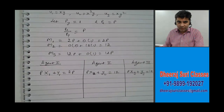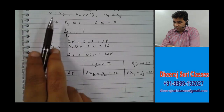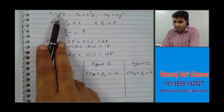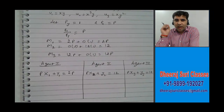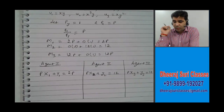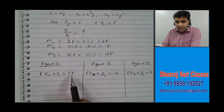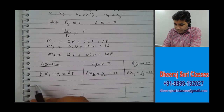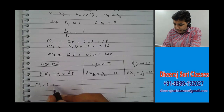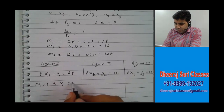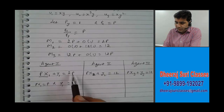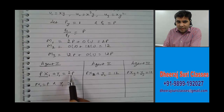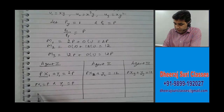Now if you look carefully, the utility functions are Cobb-Douglas functions. For agent 1 it is x times y, so alpha is 1 and beta is 1. He is spending half of his money on good 1 and half on good 2. He has income of 2P, so half of that — P — is spent on good 1 and P is spent on good 2. So we get x1 as 1 and y1 as P.